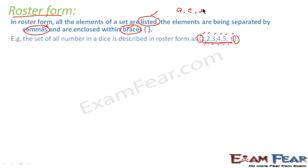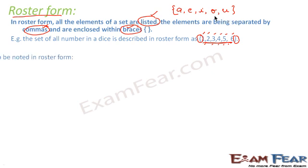For example, the set of all vowels is written as {a, e, i, o, u} — all elements listed, separated by comma, and enclosed in braces. This is the representation of roster form.